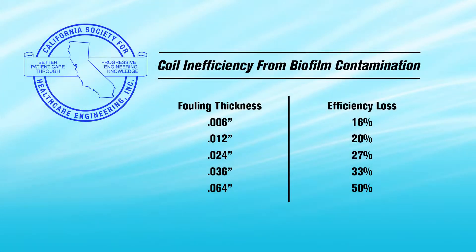According to the California Society for Healthcare Engineering, it only requires a 1.5 millimeter fouling on the coil fins, 0.006 of an inch, to reduce the coil's efficiency by 16%.